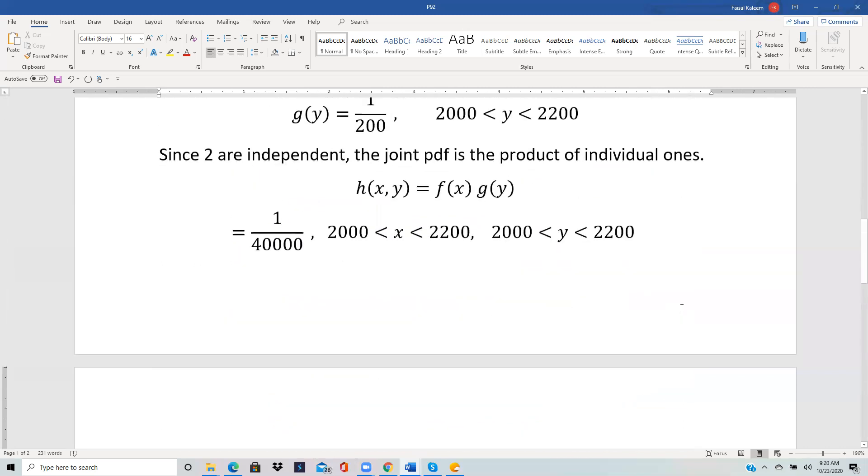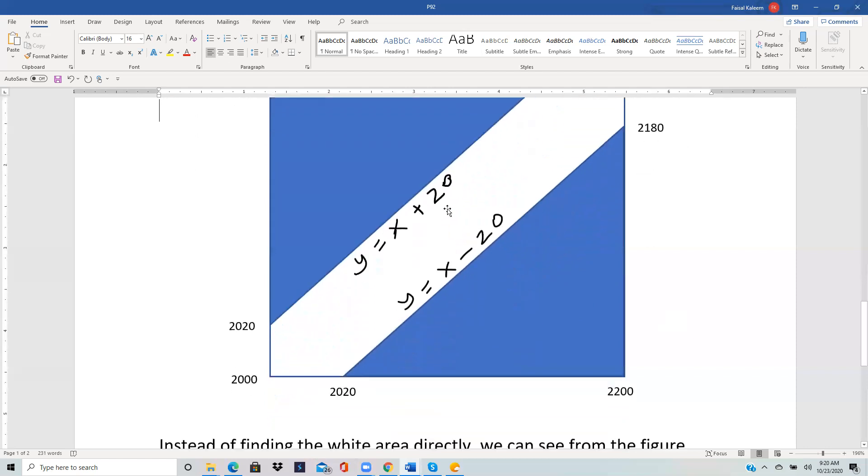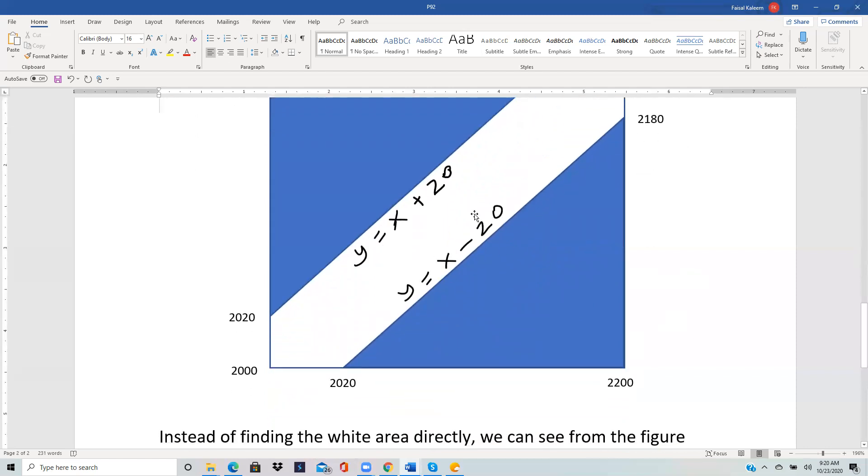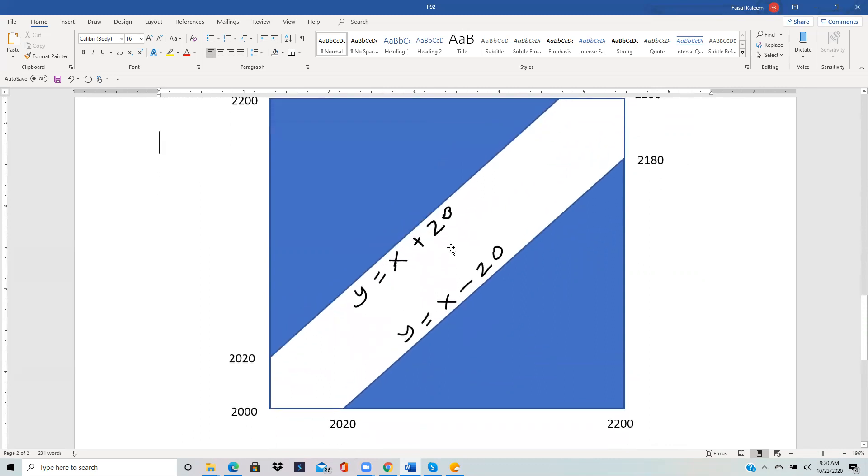We want the portion where Y is less than the X plus 20 line and bigger than the X minus 20 line. So bigger than X minus 20 is the region above it, and less than X plus 20 is the region below it, so we want this white area.